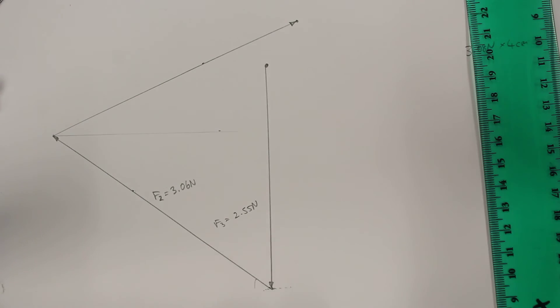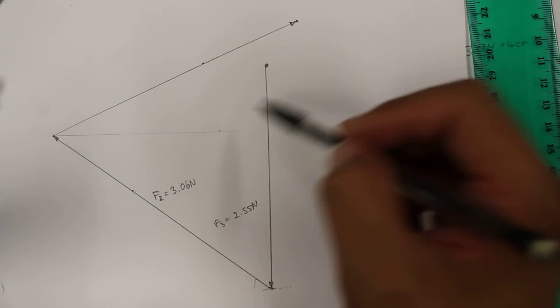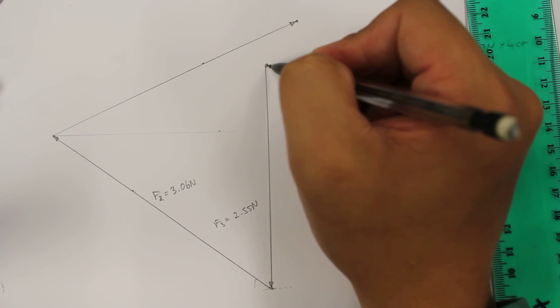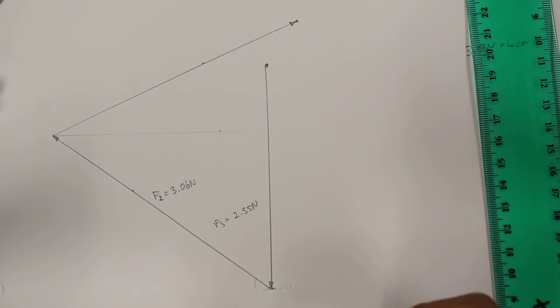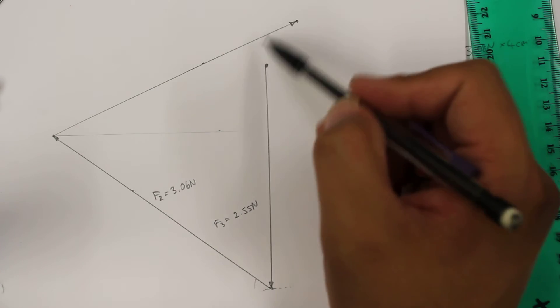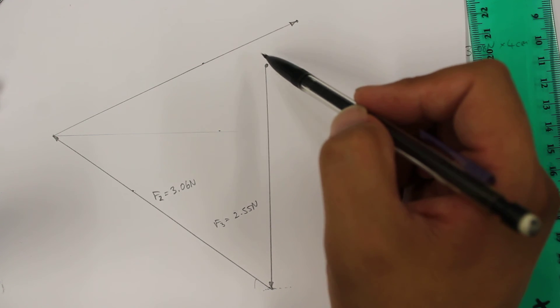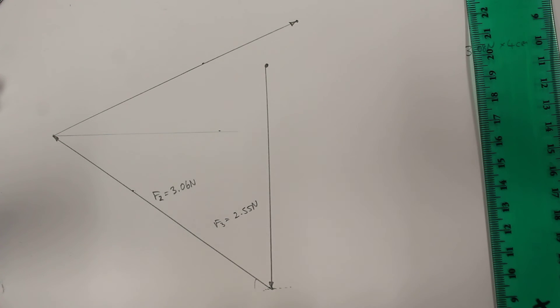Now in theory, what we should see is that this system closes, that is that this vector finishes at this point here. Now usually, if we don't get this kind of system closing to one point here, it means that one of our assumptions that we made at the beginning is untrue. So for example, the mass of the ring that we had, we assumed that that was negligible. Maybe that is not as negligible as we assumed it was.